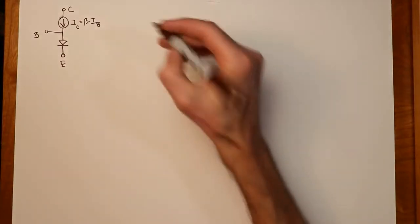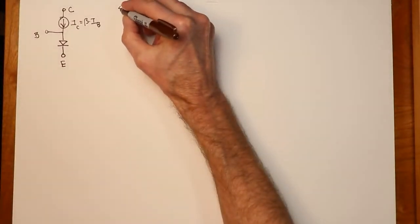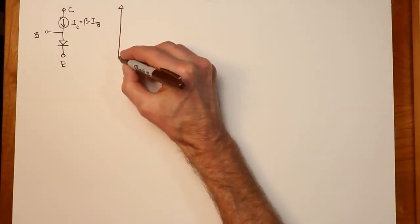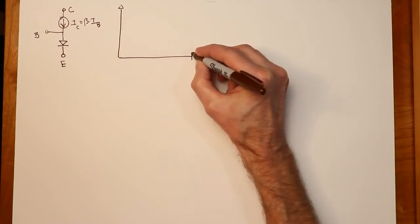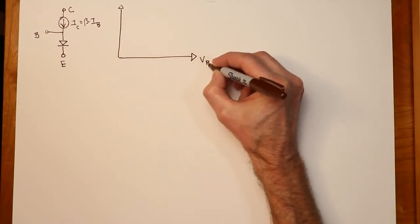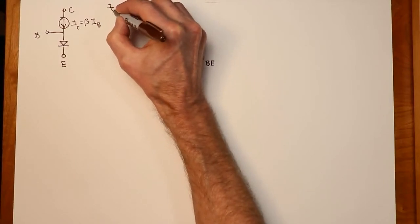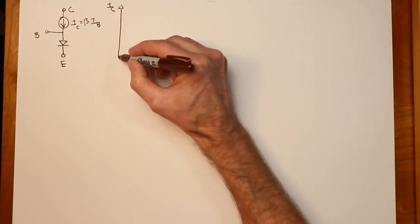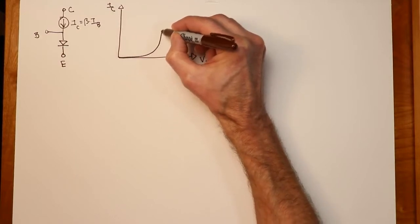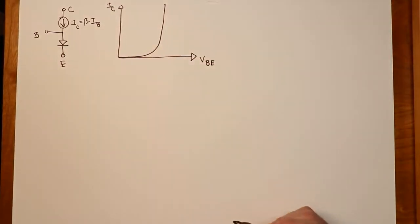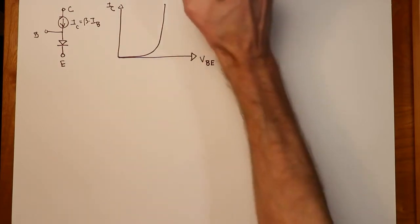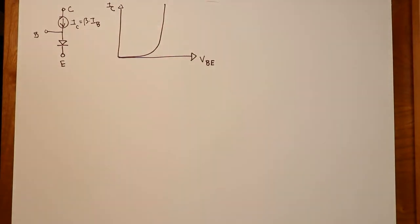Well, the key here is to recall what that junction curve looks like. So when we look at VBE versus IC, we get this standard kind of diode curve.